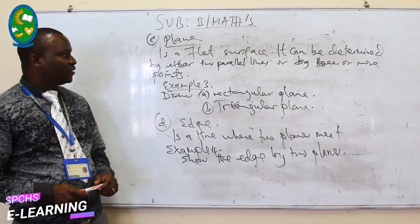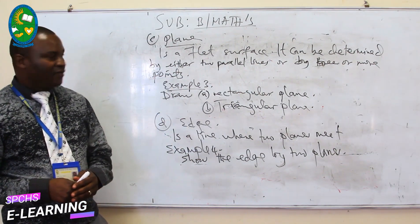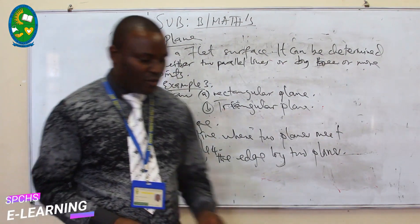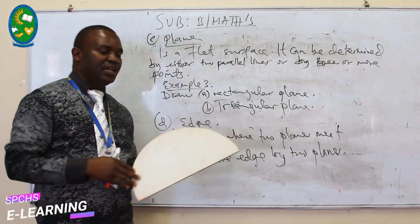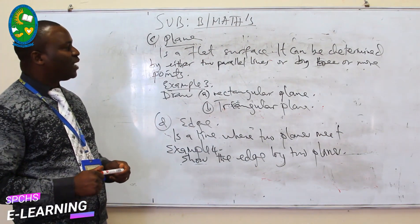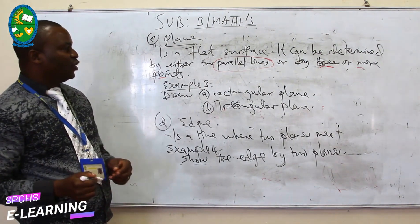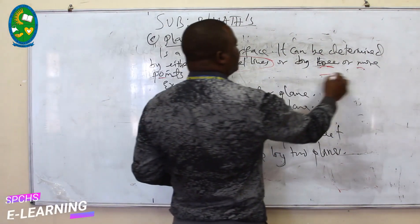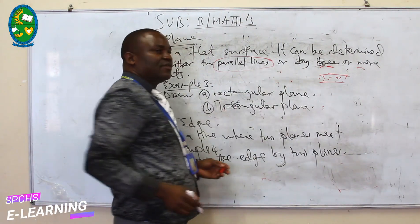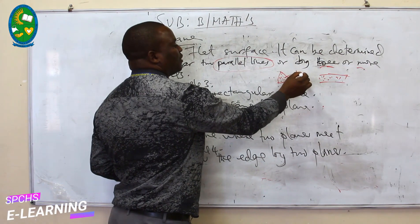Another term is plane. A plane is a flat surface — for instance, a table is flat, so its surface is a plane. A flat surface can be determined by either two parallel lines or three or more points. You can draw two parallel lines and the space between them is the plane, or you can join three points and that enclosed part is known as a plane.